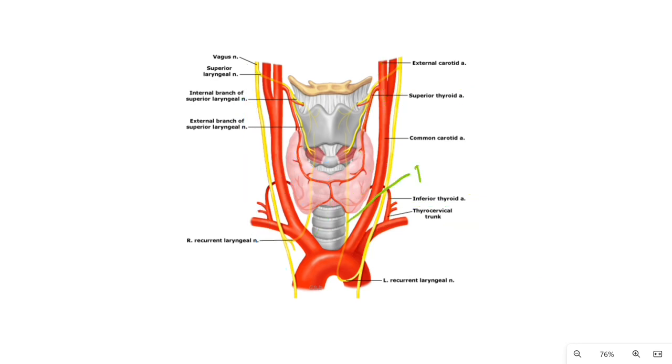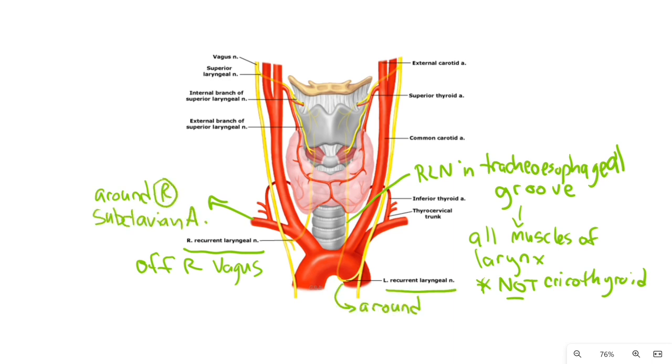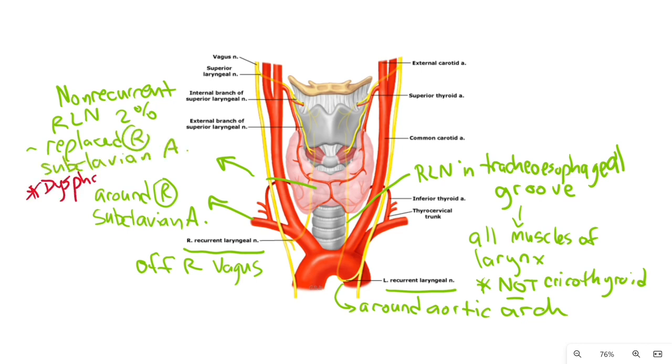The recurrent laryngeal nerves lay in the tracheoesophageal groove and provide motor to all of the muscles of the larynx except the cricothyroid and need to be cautiously protected during thyroid surgery. The right recurrent laryngeal nerve comes off the vagus and loops around the right subclavian artery. The left recurrent laryngeal nerve comes off the left vagus, loops around the aortic arch. A non-recurrent right laryngeal nerve occurs in about 2% of people and is associated with the replaced right subclavian artery which runs posterior to the esophagus and can cause dysphagia lusorium.